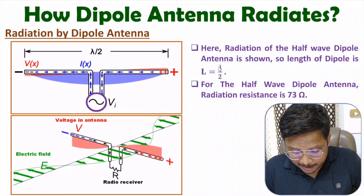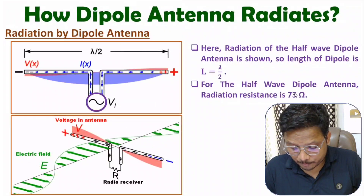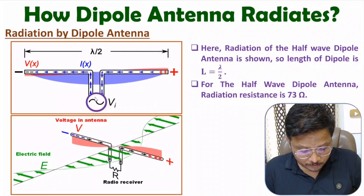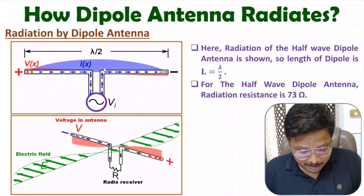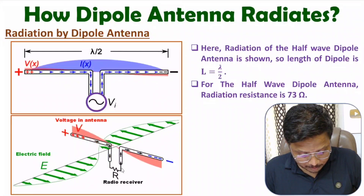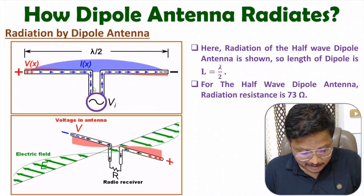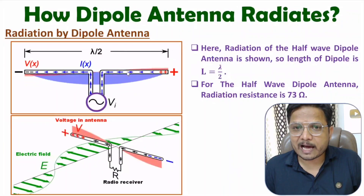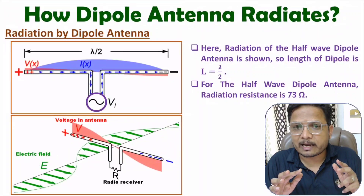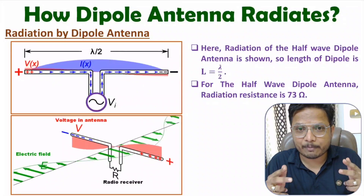When the length of the dipole is lambda by 2, the radiation resistance of the half-wave dipole will be 73 ohms. In the first diagram, the dipole is connected with a source acting as a transmitter, and in the second diagram the dipole is connected with a receiver. The functioning of the dipole as transmitter or receiver is the same — there is no difference in terms of electric field and magnetic field direction.